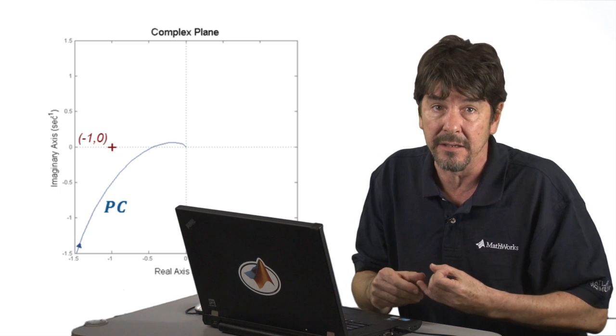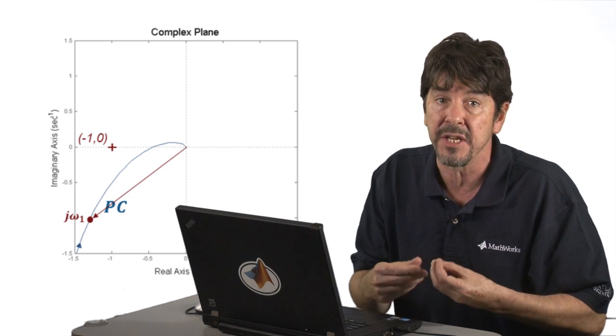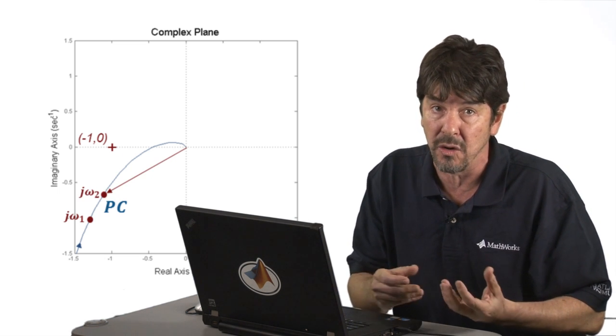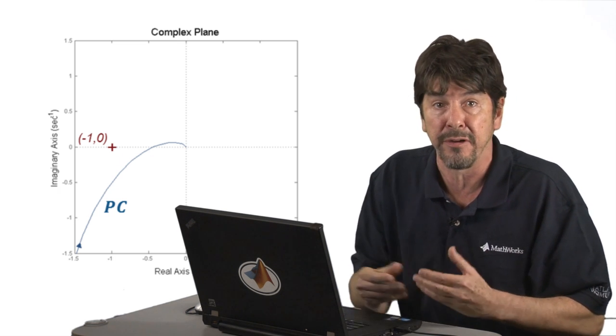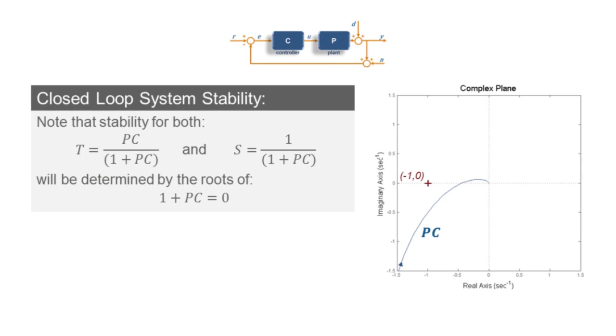For each different value of omega, the magnitude and the phase of that vector will give us a unique point on the diagram. And if we sweep for all values of omega going from 0 to infinity, we will end up with a complete frequency response trace for our transfer function. In this case, we are looking at a Nyquist plot of our open-loop transfer function PC.